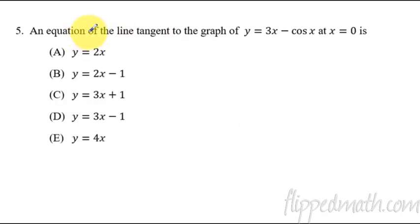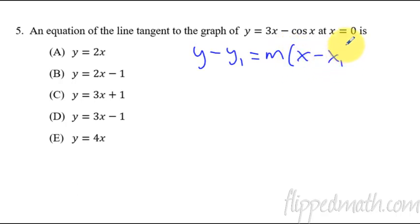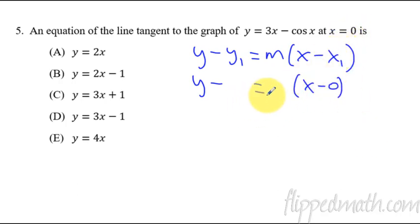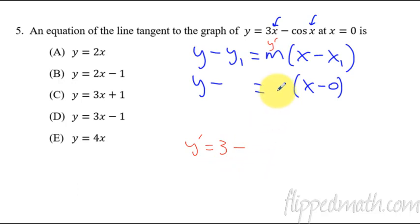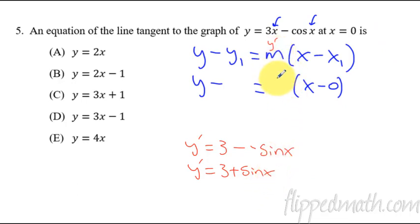Okay, last problem. We're coming up with an equation of a tangent line. We need y minus y1 equals slope times x minus x1. We have x equals zero, so it's x minus zero. Plug zero into the original function to get y1. Then for the slope, remember m is y prime. Take the derivative: y prime equals three minus negative sine x, so y prime equals three plus sine x. Plug in zero — that's your slope m. Once you have that all set up, solve for y and you get your answer. Hopefully that was helpful and good luck on that test.